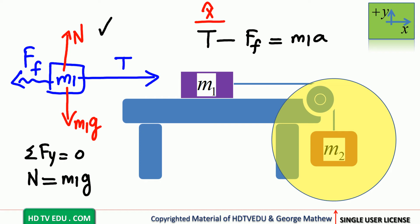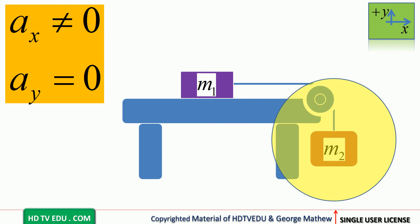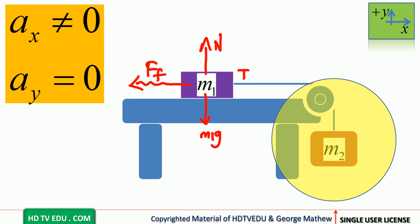Reviewing the free body diagram for mass m1: tension acts to the right, normal force acts vertically up, gravitational force acts vertically down, and force of friction acts to the left. We expect the tension arrow to be greater in length than the force of friction. Along the horizontal: T minus Ff equals m1a. Along the vertical: normal force equals m1g.